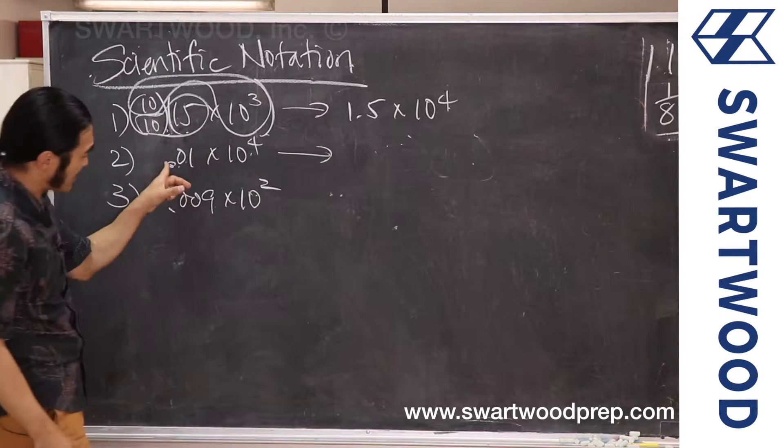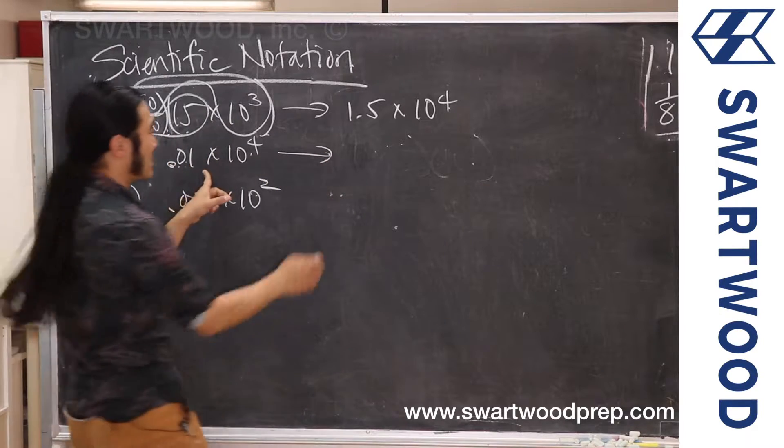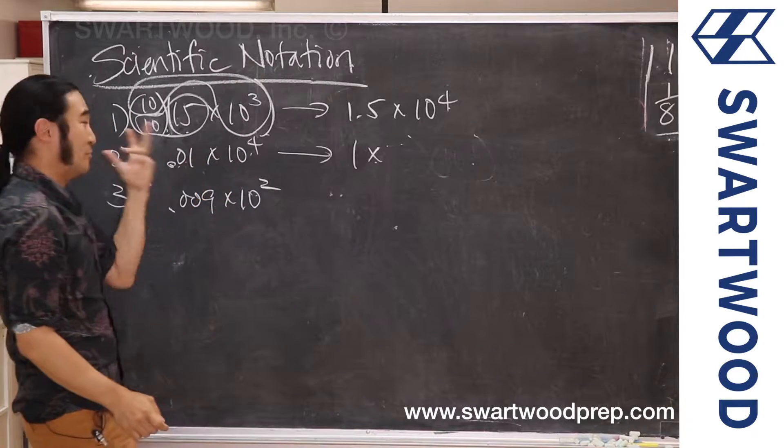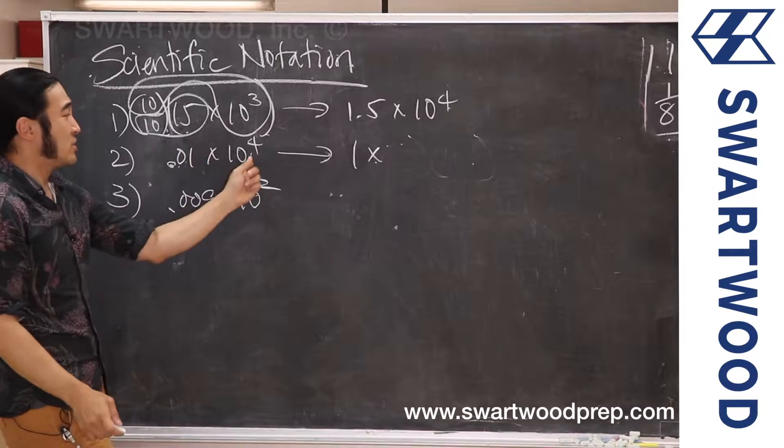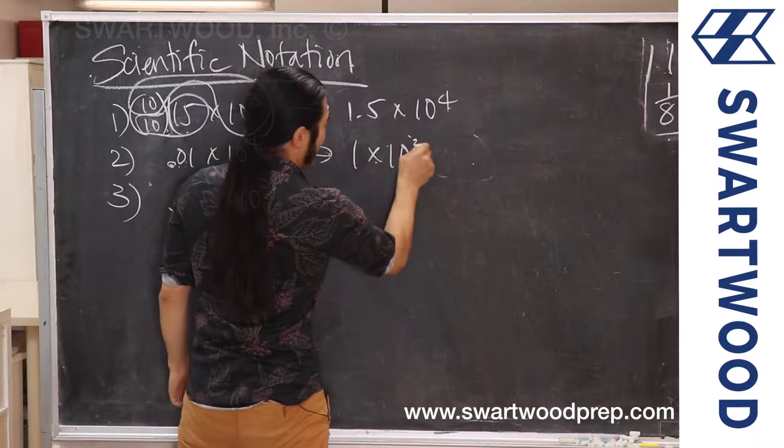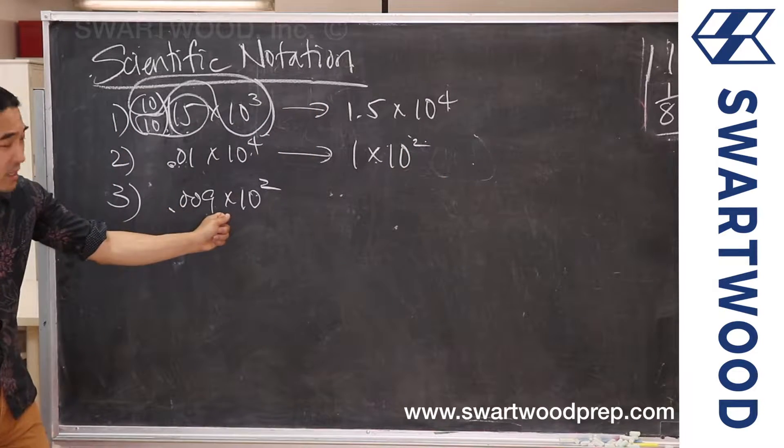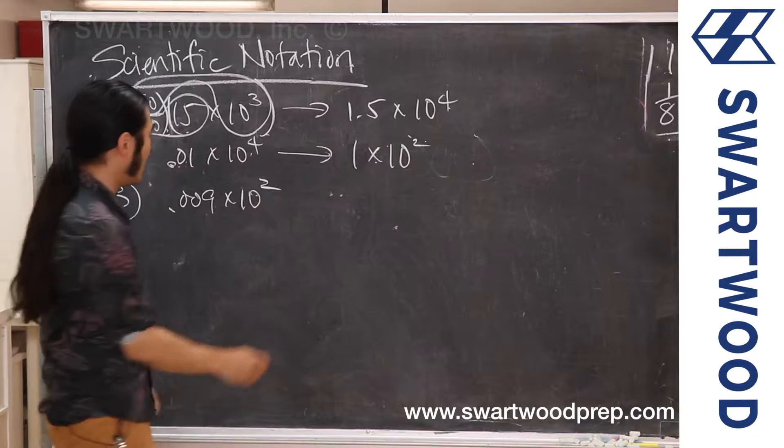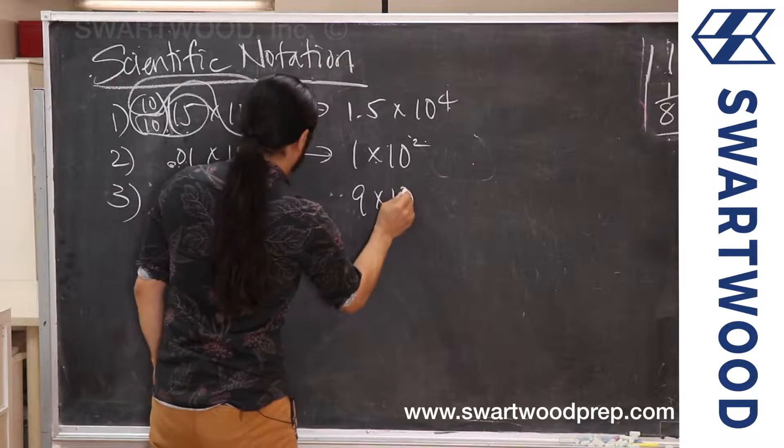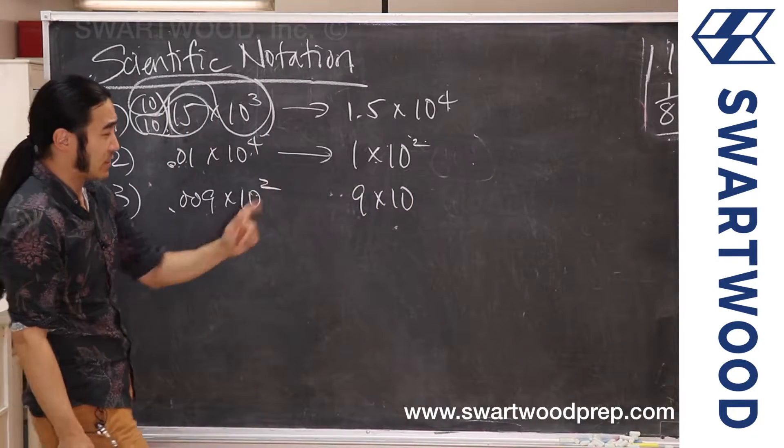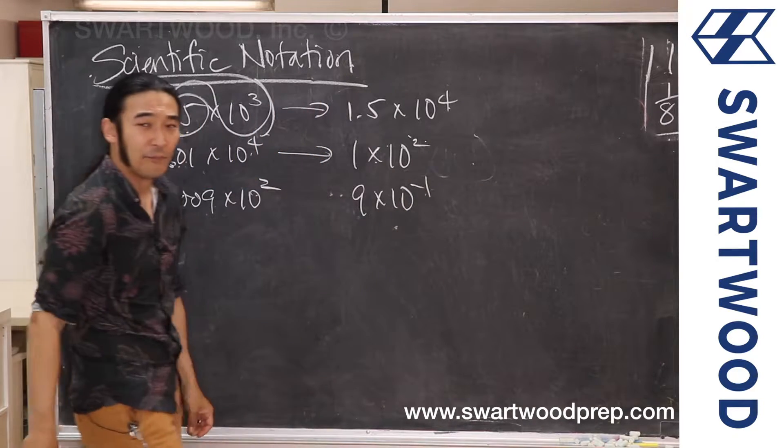Same thing over here. We're going to move 1, 2 decimal places, that's 2. So you're making it big by a factor of 10², so you make this guy smaller to compensate by a factor of 10². Over here, we're going to make this guy 1, 2, 3 bigger, so we're going to make this guy 3 smaller. So it's going to be 9 times 10 to the—well, 3 smaller would be 2 minus 3, which is 10 to the negative 1.